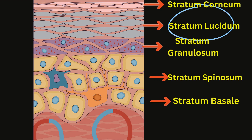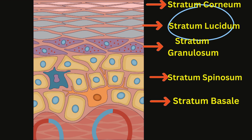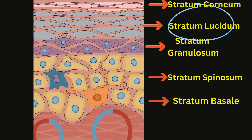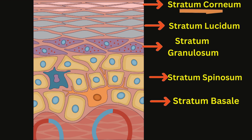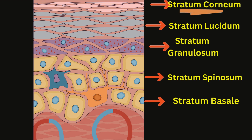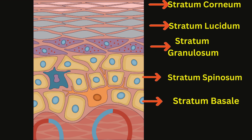Stratum lucidum: present only in thick skin (e.g., palms and soles), consists of clear, flattened, and densely packed keratinocytes. Stratum corneum: the outermost layer, composed of dead, flattened, and fully keratinized cells. It acts as a protective barrier against environmental factors.